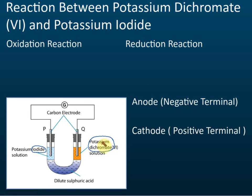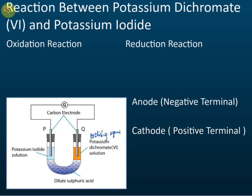So Q is the oxidizing agent. You only need to identify one — if you know one is the oxidizing agent, the other must be the reducing agent. The oxidizing agent undergoes reduction, and reduction always occurs at the cathode. So Q is the cathode.